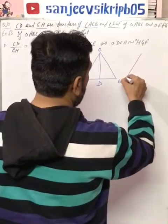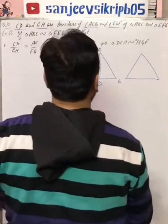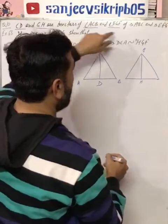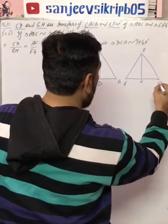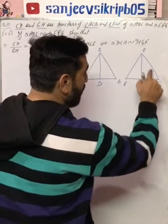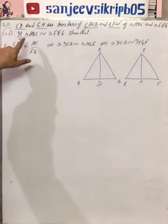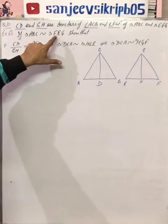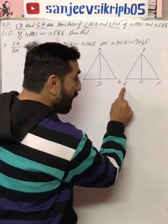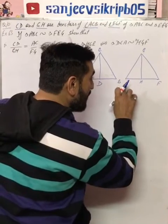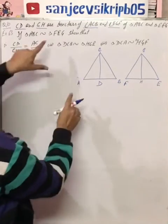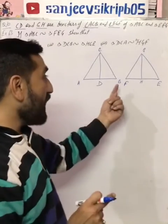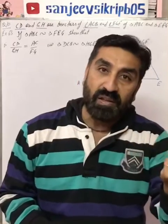One more triangle we are given. The bisector is GH, which means G is the vertex. So triangle A, B, C, F, E, G — this is the same thing. If we are given the bisector here, the bisectors would come here. And if you look at E and F, then the bisectors would come here. Now we have taken the exact right direction, so it will be easy to see.